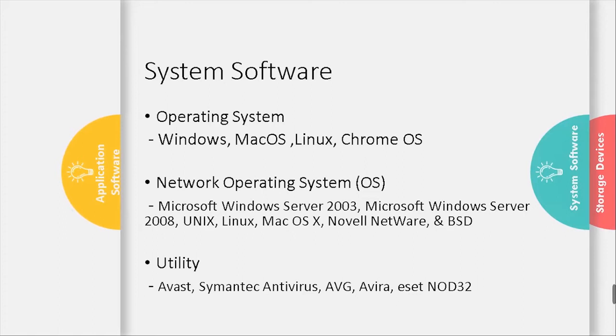Utility software examples include Avast, Semantic Anti-Virus, AVG, Avira, and SETN32.